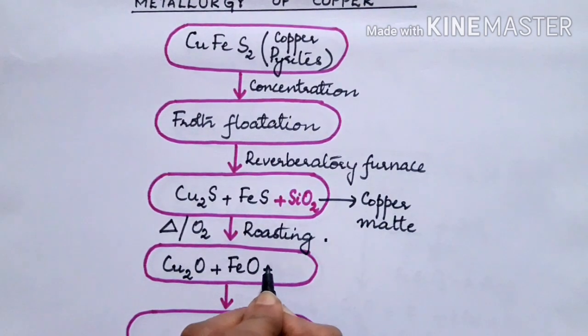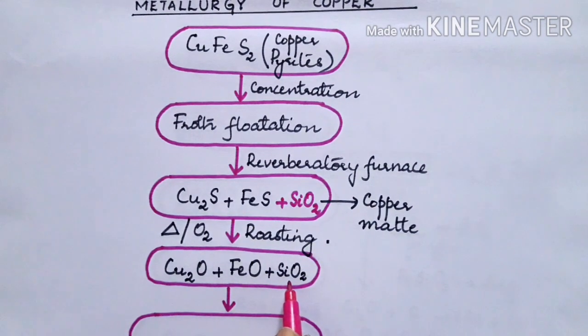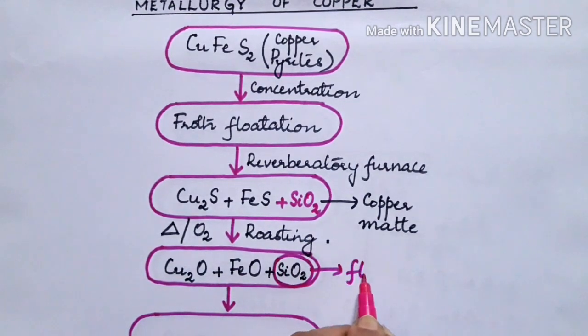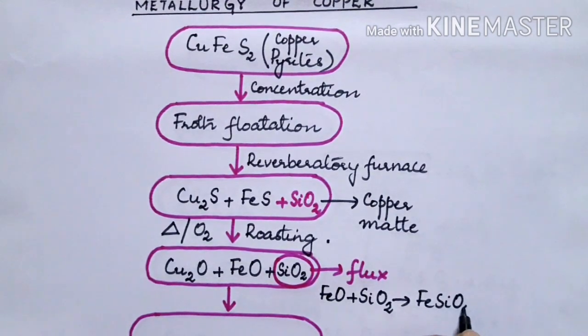And we have silica also present here. Now you find that the extra substance that is present here, that is the gangue present here is FeO. FeO is removed by treatment with silica. So here the flux added is silica and iron oxide reacts with the flux forming FeO plus SiO2 giving FeSiO3.